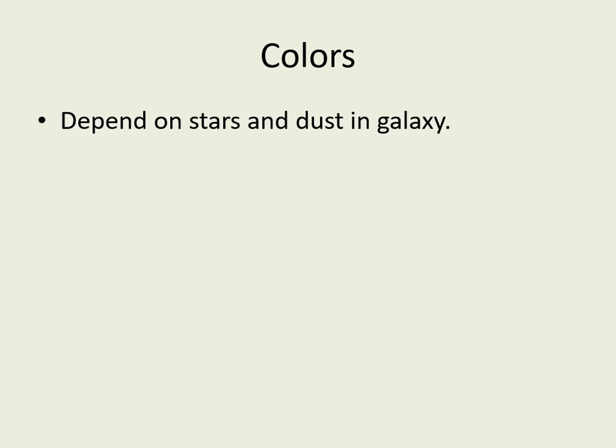Galaxy colors usually depend on the population of stars and sometimes dust within the galaxy. A blue galaxy generally means a galaxy with a lot of hot, young stars, and hence active star formation, since blue stars typically have short lives. On the other hand, a red galaxy usually means the galaxy's light is dominated by older, redder stars, which means there isn't much active star formation.